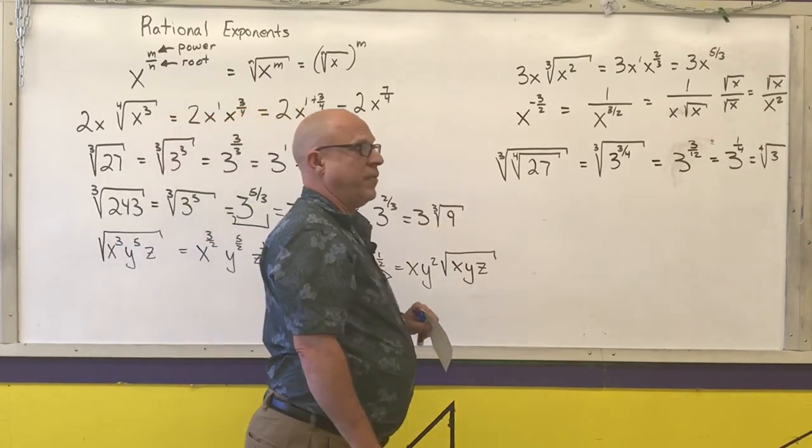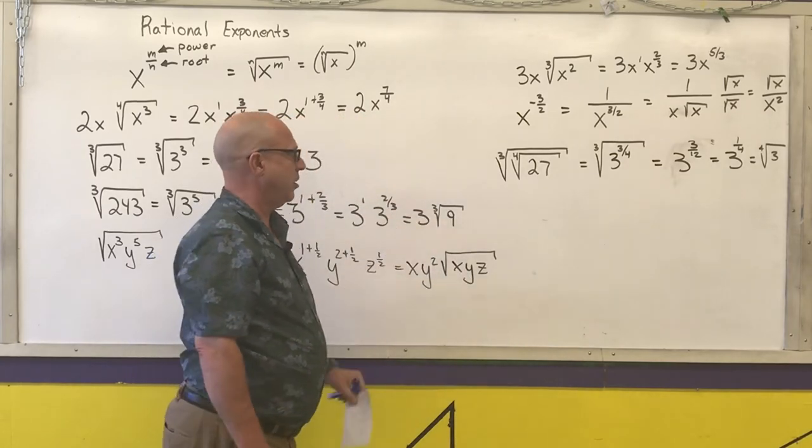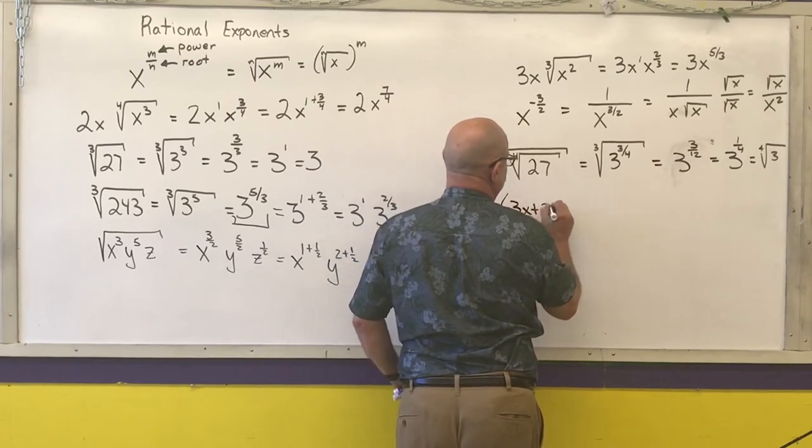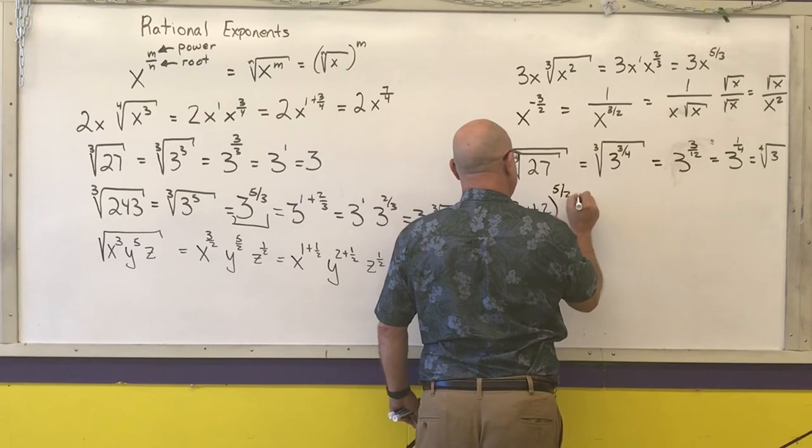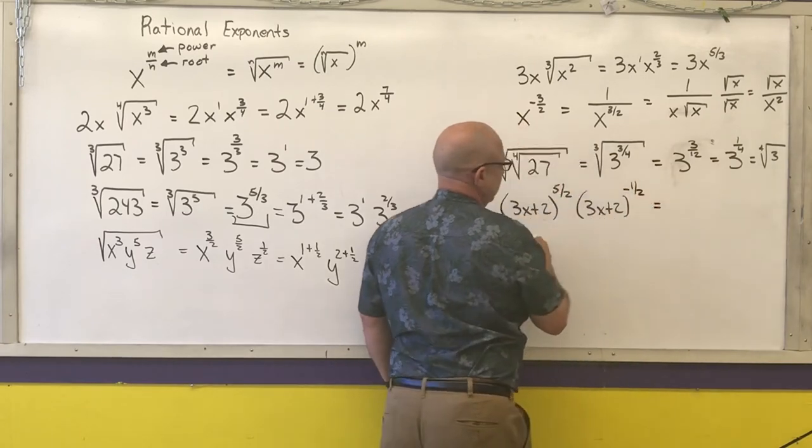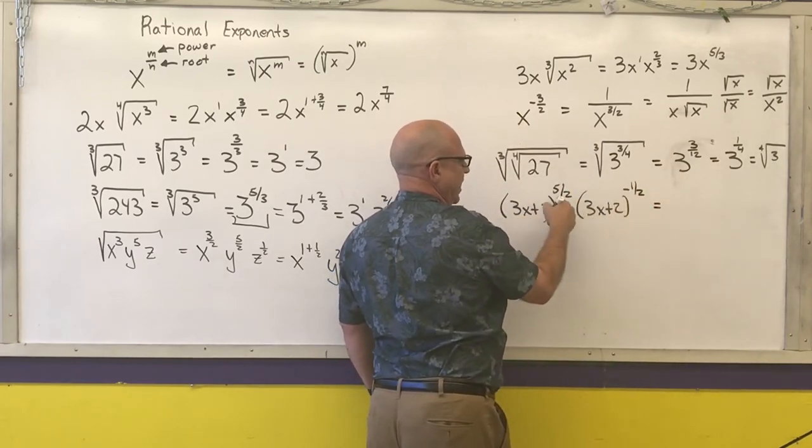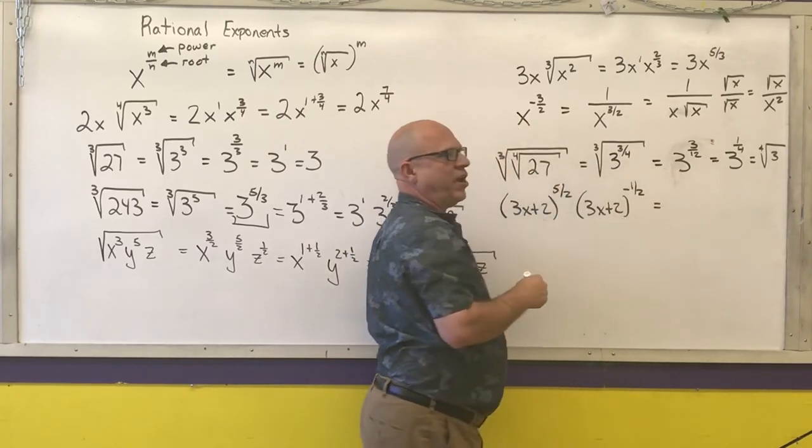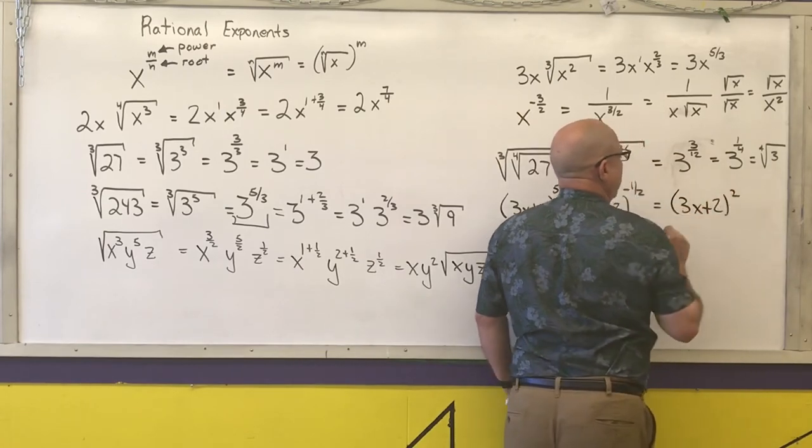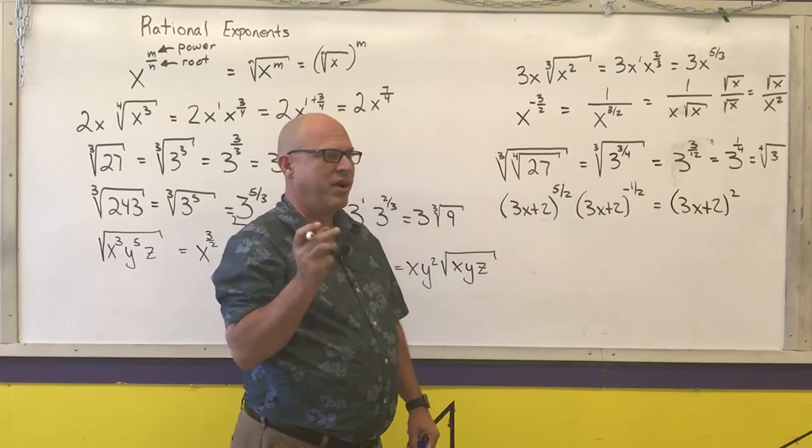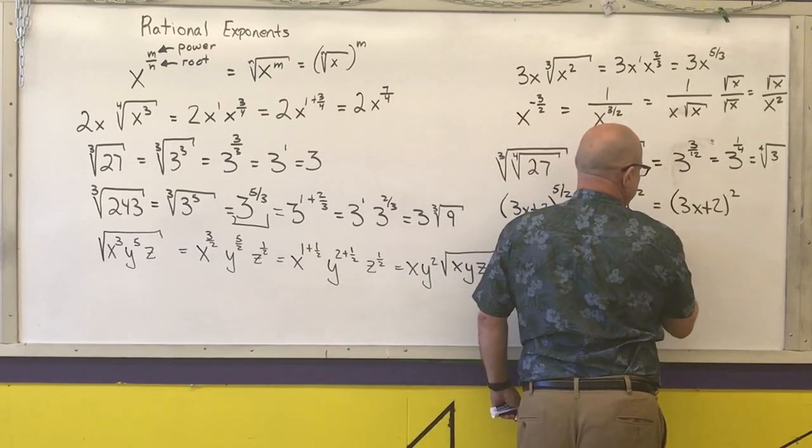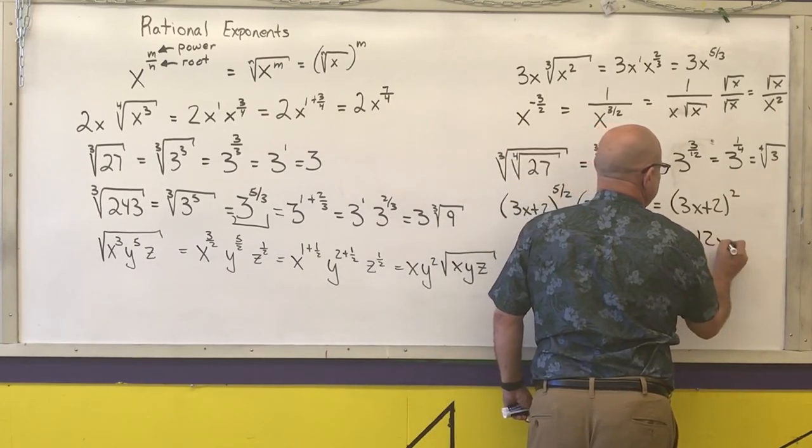Where you're going to see it come in more advanced algebra classes or calculus are where I'm raising polynomials to powers. 3x plus 2 to the five-halves times 3x plus 2 to the negative one-half. Two things to the same base raised to powers, you add their exponents. Five-halves minus one-half is four-halves. Four-halves is two. I can use either my memorized rule for perfect squares or I could foil this out. The final answer would be 9x squared plus 12x plus 4.